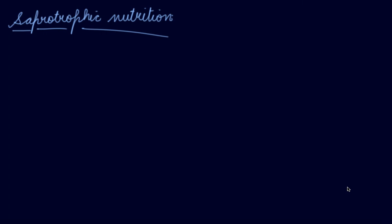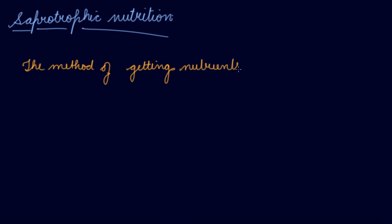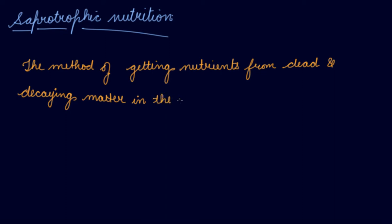Saprotrophic nutrition — there are some non-green plants that live on dead and decaying plants and animals and derive their food from them. The method of getting nutrients from dead and decaying matter in the form of a liquid is known as saprotrophic nutrition.